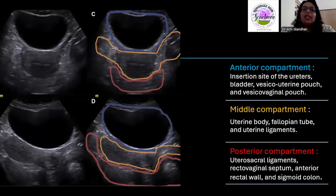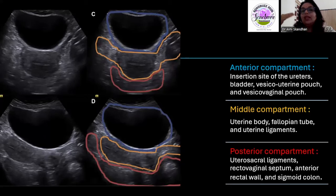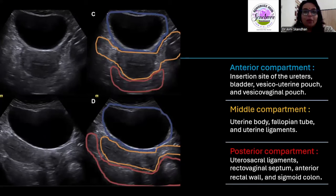It is very important that we proceed in a structured manner. The first and foremost important thing is to compartmentalize the pelvis into three compartments: the anterior compartment, comprising anything anterior to the uterus — the distal ureters, the bladder, the vesicouterine pouch, and the vesicovaginal pouch.